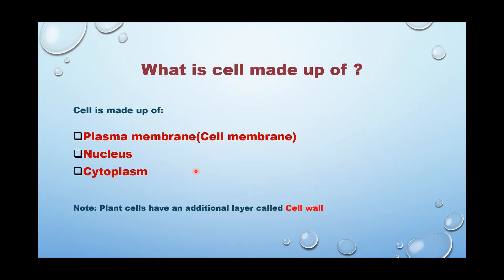What is a cell made up of? A cell is mainly divided into three parts: the plasma membrane, which is the outermost layer also called the cell membrane; the nucleus; and the cytoplasm. Plant cells have an additional layer called the cell wall, which is the outermost layer for any plant cell.